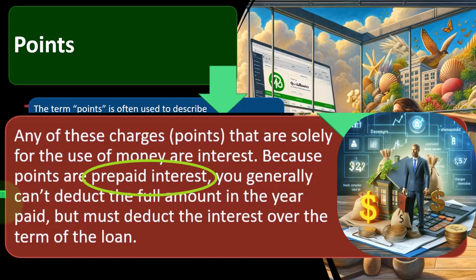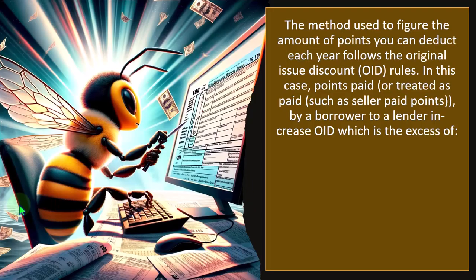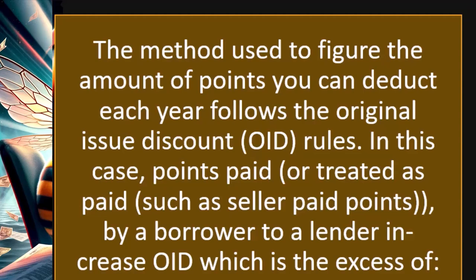The IRS says even on a cash basis you can't simply prepay things to distort your taxes, so points are usually put on the books as a separate asset — not part of the house — and amortized over the life of the loan, similar to depreciation. Once set up in the first year, if you use the same tax software year to year, the points calculations should be easy going forward. The first year you'll need to comb through the closing statement to categorize everything correctly.